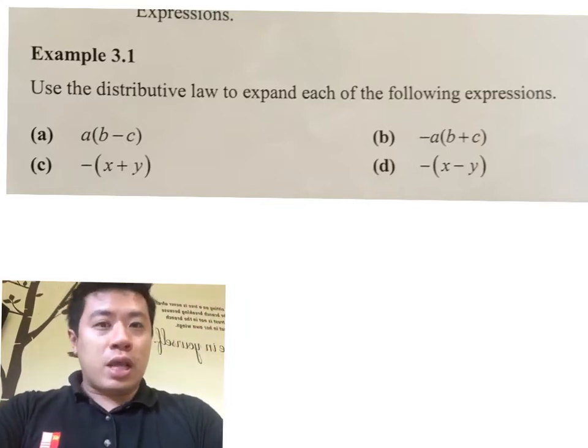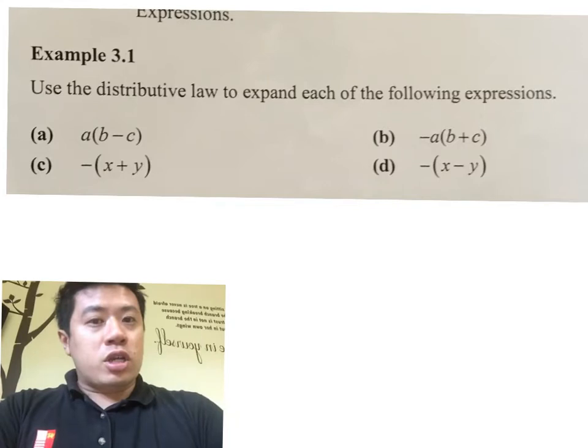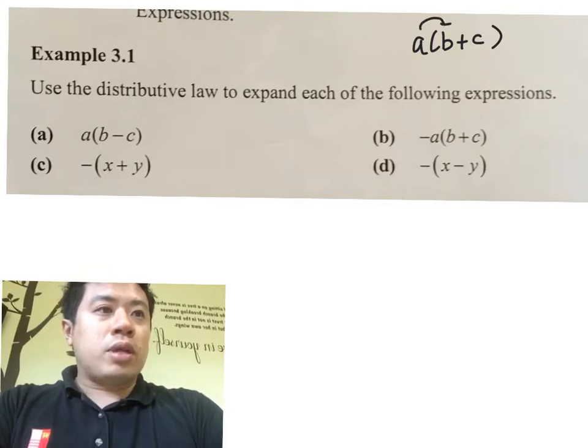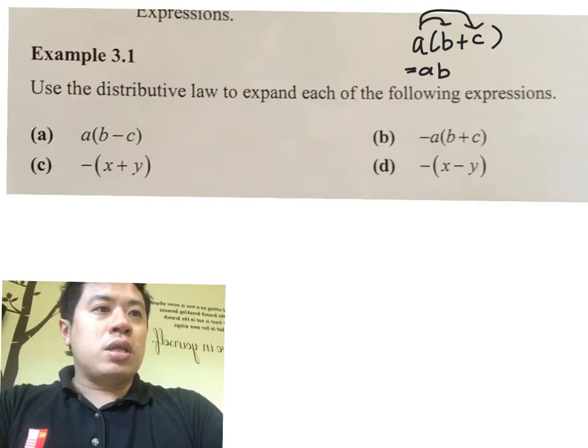The distributive law tells us that, just a recap if you haven't paid attention during lesson, A bracket B plus C—so A multiplied to B plus A multiplied to C—gives us AB plus AC.